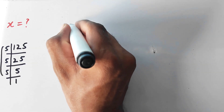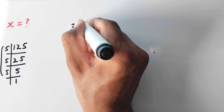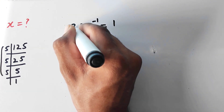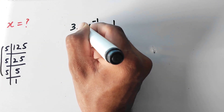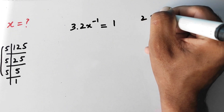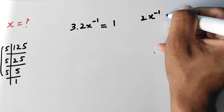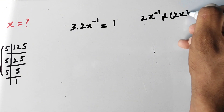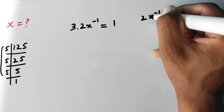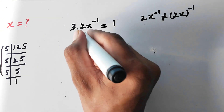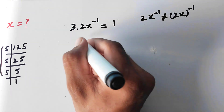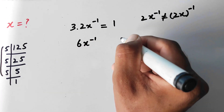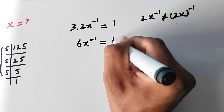We will write again 3 times 2x minus 1 is equal to 1. Now we can multiply 3 with 2, because here 2 and x are two separate values, not 2x as a whole power. So multiplying 3 by 2 gives us 6x minus 1 is equal to 1.